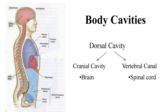We're going to start first with body cavities, beginning with what we call the dorsal cavity. If you remember from our last video, dorsal is posterior, so the dorsal cavity is going to be the cavity on the back side of the body. If we look at our diagram here, it is this cavity here that is kind of this reddish-orangish part.